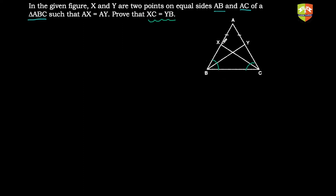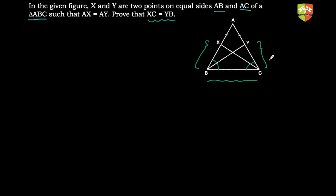If you look at these two triangles — triangle XBC of which XC is a part, and triangle YCB of which YB is a part — one side BC is common, and one angle is also equal. If somehow we prove that XB is equal to YC, then by SAS criteria we can prove the two triangles congruent, and hence XC will equal YB. So that should be our line of action.